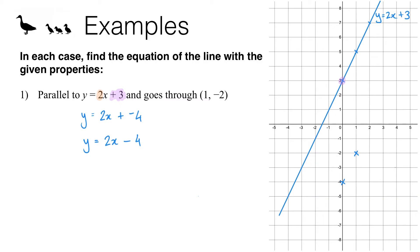Let's draw this out to verify. We're going to have a line with a gradient of 2 that goes through the point (0, -4) — negative 4 on the y-axis. A gradient of 2 means that every time we go one step across we go two steps up. Joining these up with a straight line gives us a line that is parallel to the original and goes through the point (1, -2), which is exactly what we wanted.